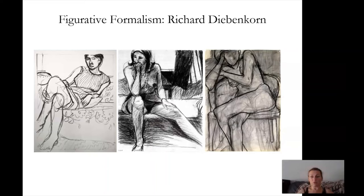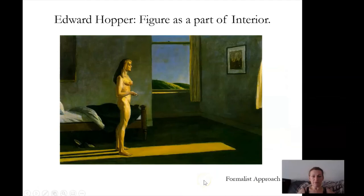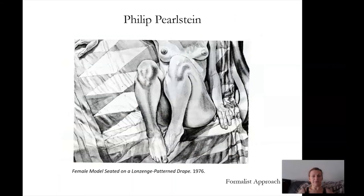This is one type of study that I would want you to do later as well. For Diebenkorn, the study of the figure is a pure formalist study of composition. He does the same with color — just a compositional study — where the window and shapes on the wall are just as important as the shapes of the figure. Edward Hopper is another formalist artist. For him, the figure is just part of the interior, and the light — how the light falls on the figure, how the figure stands out against the dark wall. Very beautiful paintings, but formalist in character.